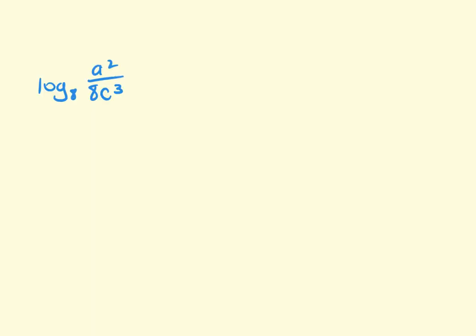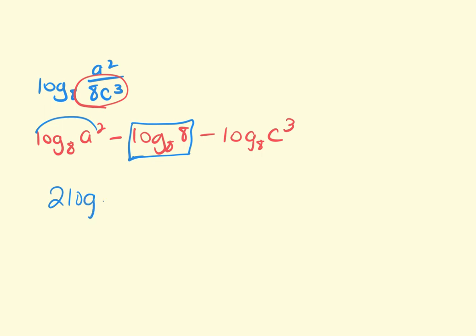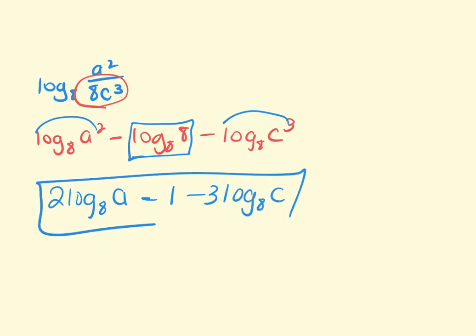This was second to last. So if I'm separating this out, it's division, right? Which means what? Subtractions. So it would be log base eight of A squared minus these both go in the bottom. But there are two terms, so they need to get separated. So this would be log base eight of eight minus, because they're both in the bottom, log base eight of C to the third. And then what is log base eight of eight? One. So this bumps forward. Two, log base eight of A minus one. And then this bumps forward. Minus three, log base eight of C. That was the most expanded form. Some of you kept the bottom two together. Those are two terms. They have to get separated out. And then some people just didn't simplify the log base eight of eight, which needed to get simplified.